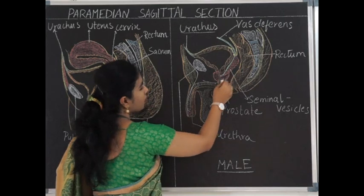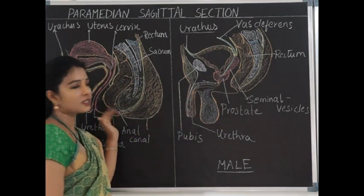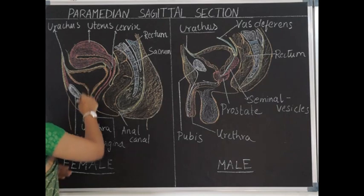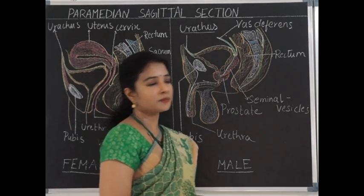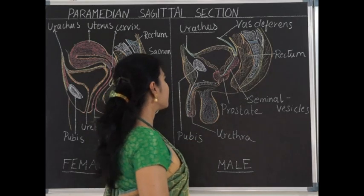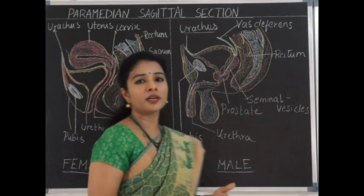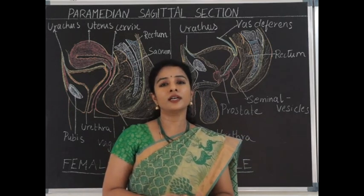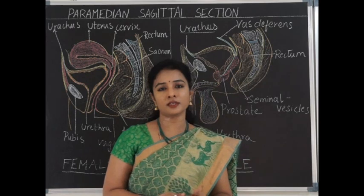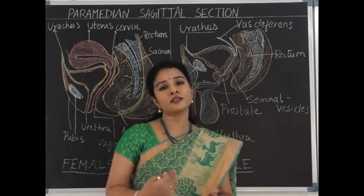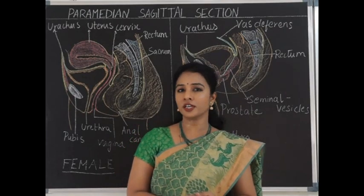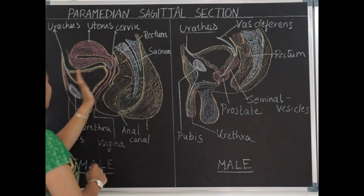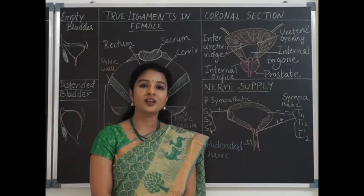Inferiorly in males, the prostate gland is present below the urinary bladder, whereas females have no such gland. Anteroinferiorly, the retropubic space is present in both males and females. Below the retropubic space, the anterolateral wall of the pelvis is formed by the levator ani muscle and obturator internus muscle, which are covered by the fascia of levator ani and fascia of obturator internus — these muscles are separated from the bladder by the retropubic space.